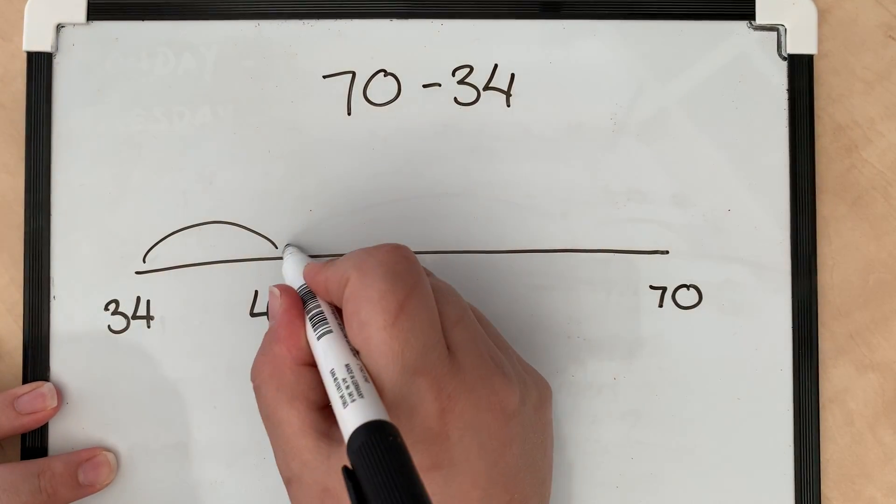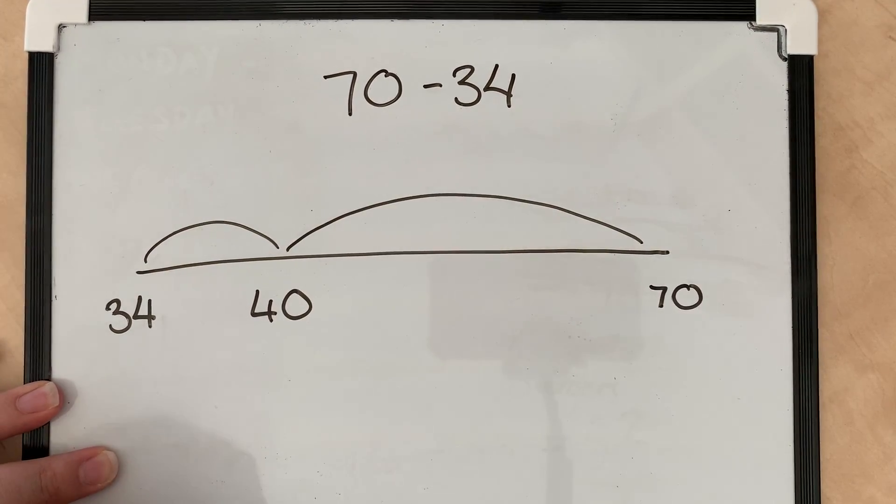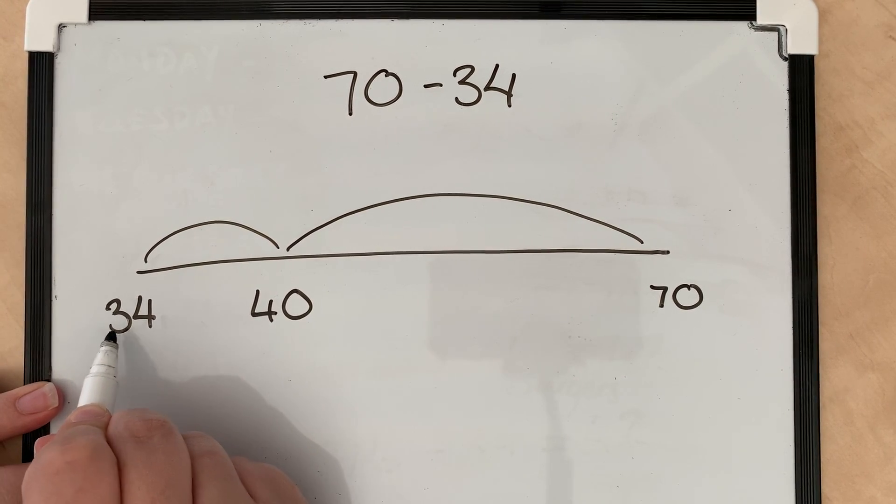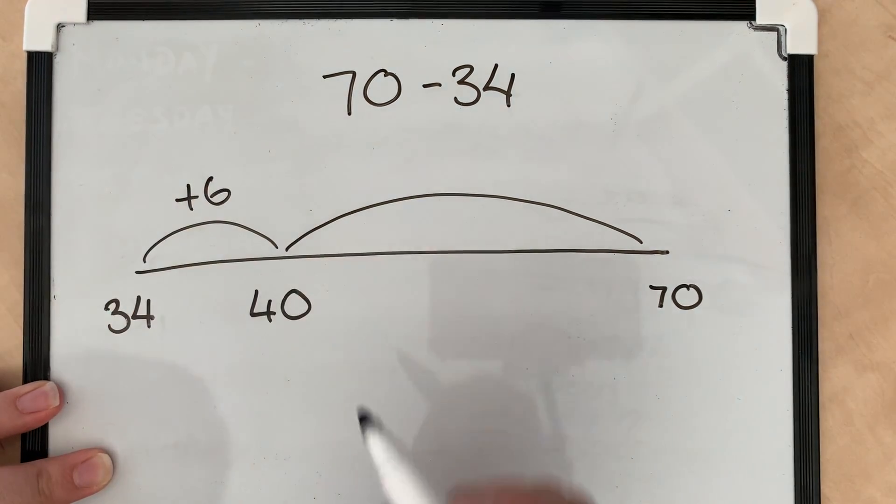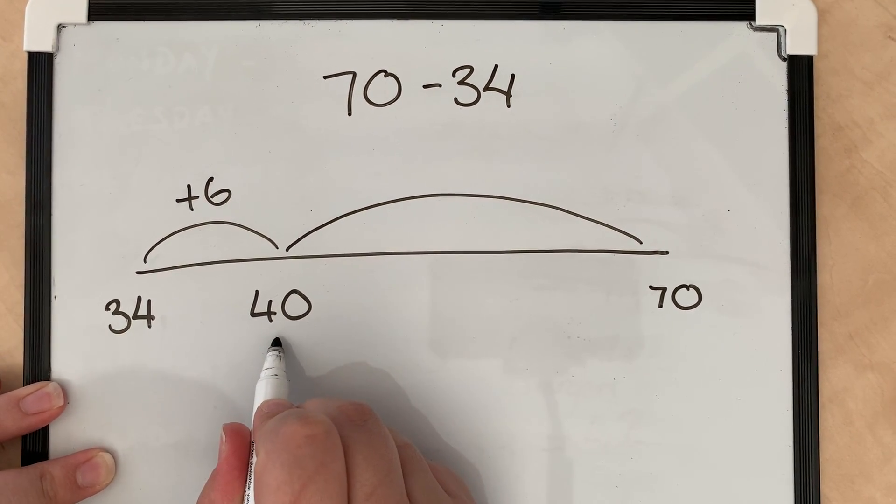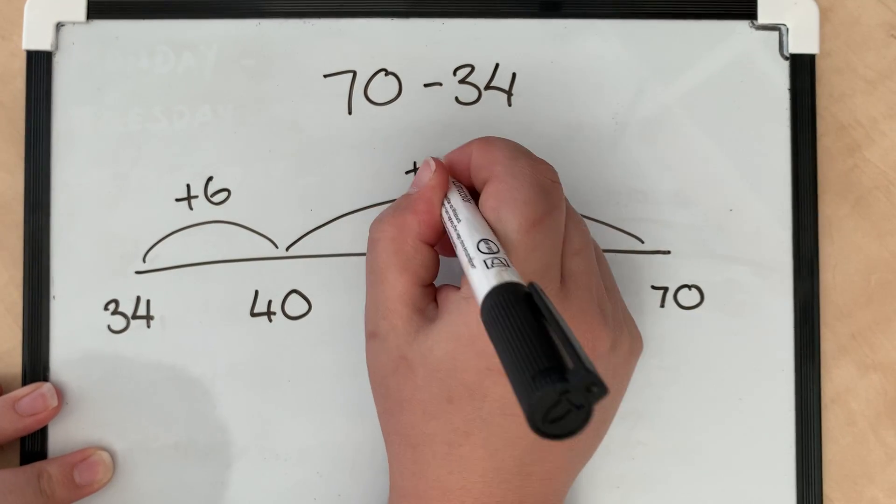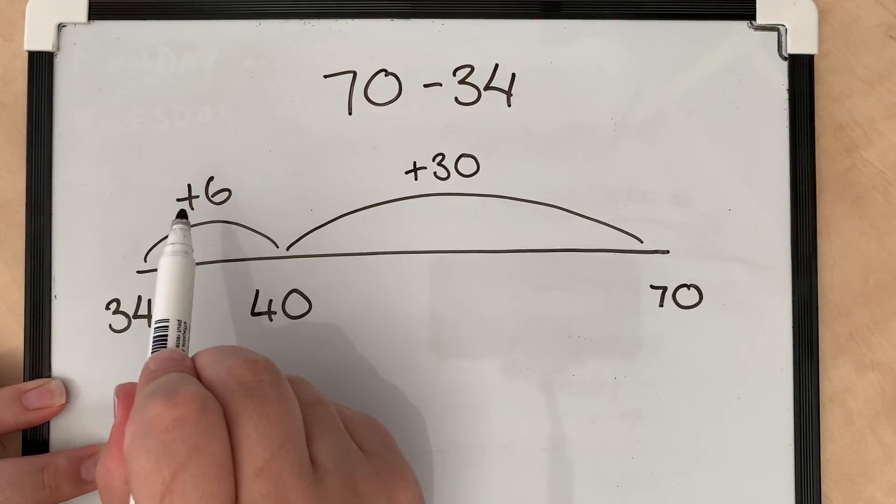Then you're going to just map out your jumps between your numbers. So we're going to figure out the jump from 34 to 40, which would be 6, and then the jump from 40 to 70, which is 30.